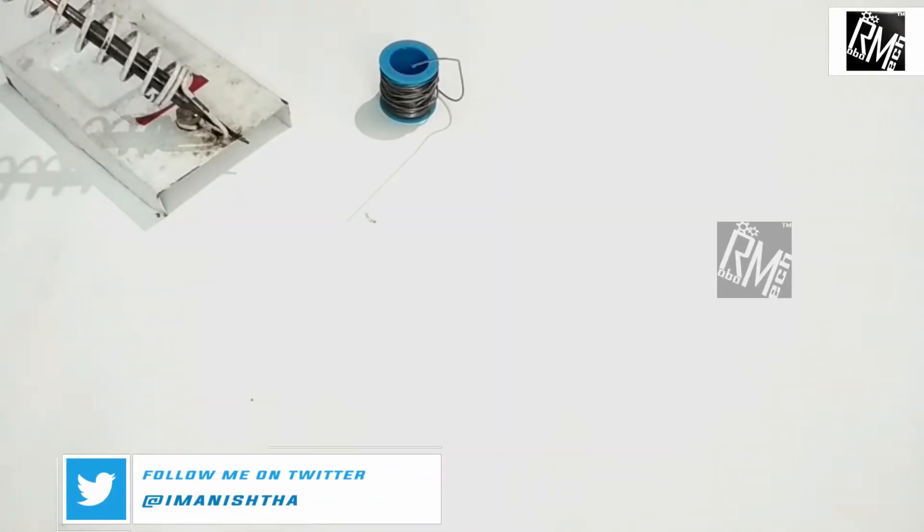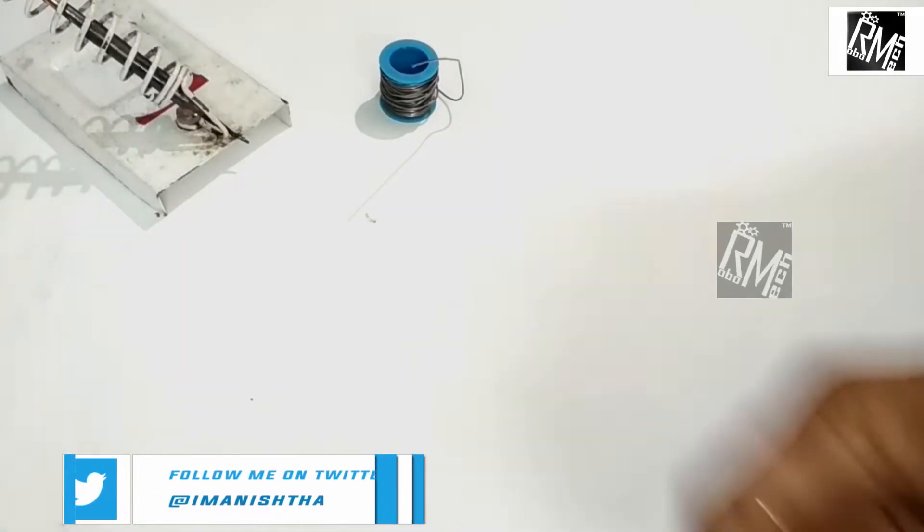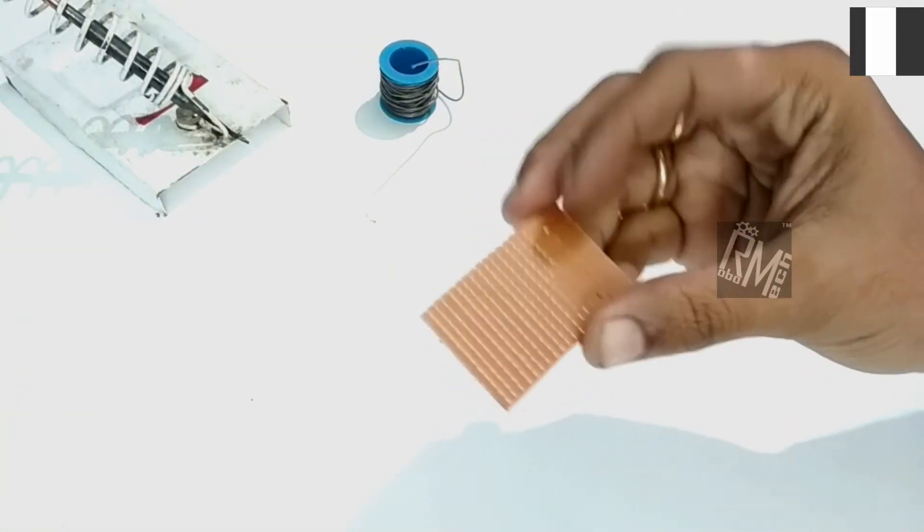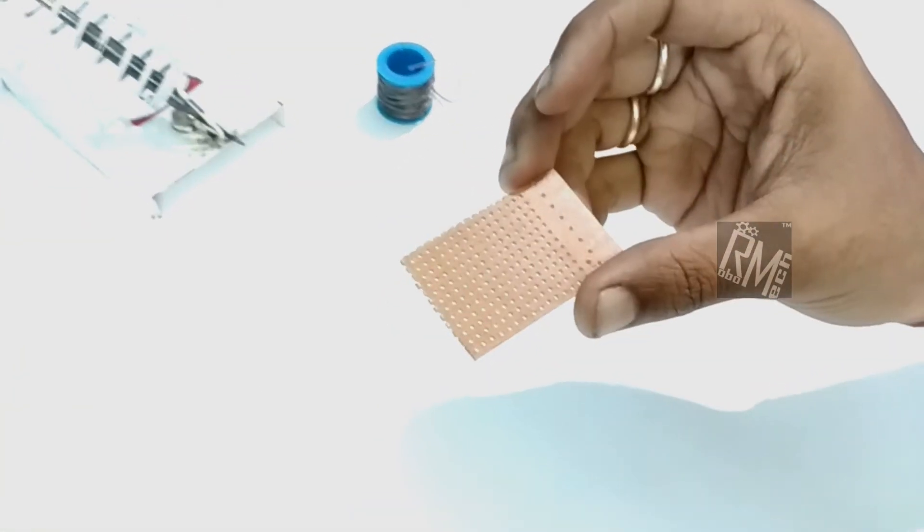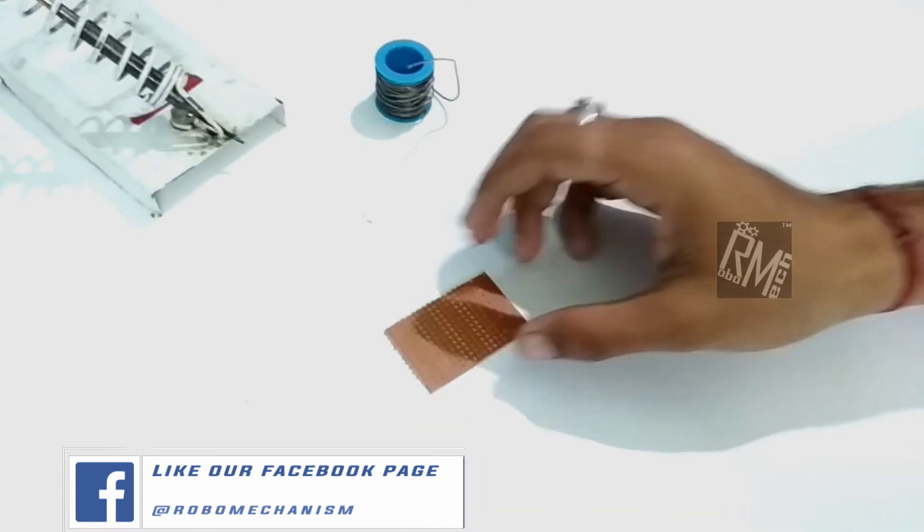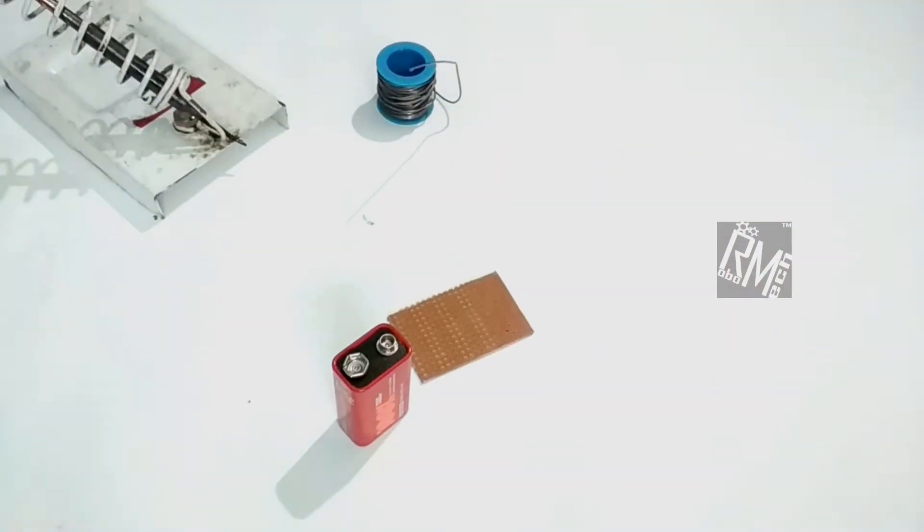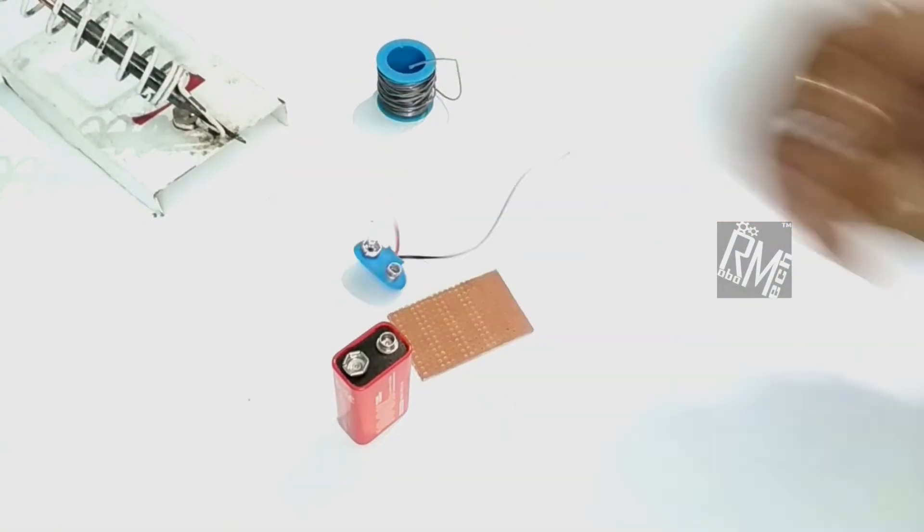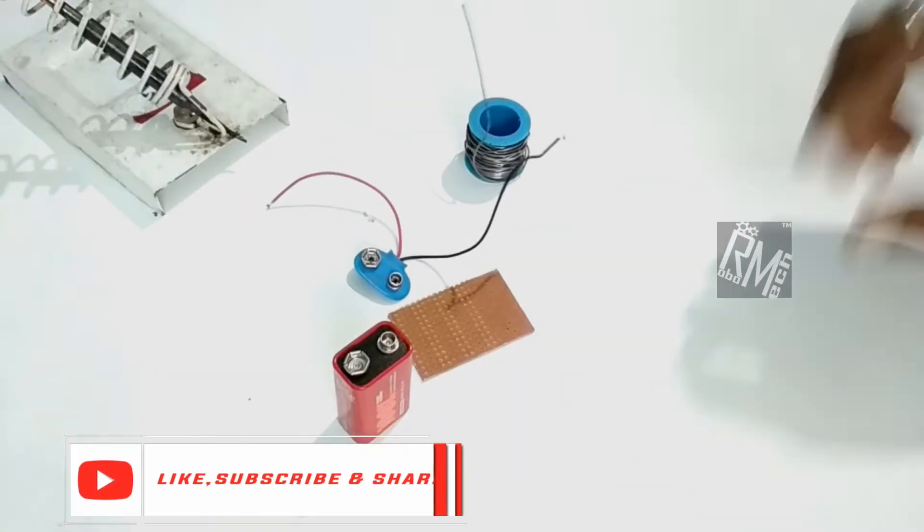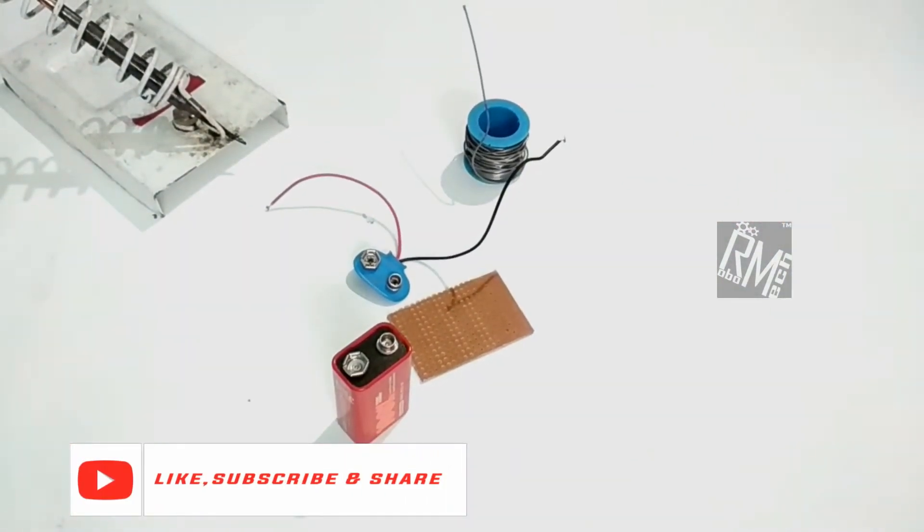Welcome again to RoboMac. In this video, we will be making an emergency battery charger. For this, we need a perforated board (any size will do), a 9-volt battery, a battery clip, flash holder, a soldering iron, and a female USB header.